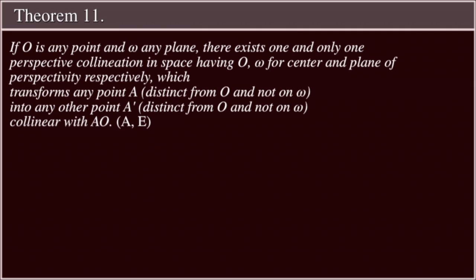Theorem 11: If O is any point and omega any plane, there exists one and only one perspective collineation in space having O and omega for center and plane of perspectivity, respectively, which transforms any point A distinct from O and not on omega into any other point A prime, distinct from O and not on omega, collinear with O.